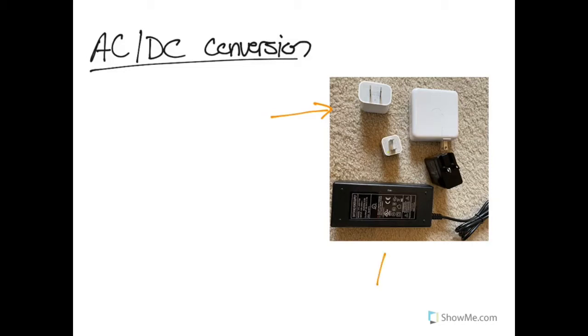We have all of these converters around our house for our phones, computers, laptops, and all of our modern electronics. What these devices are doing is converting the AC signal from the power that comes to our house from the power company into DC signals that are used by our devices.